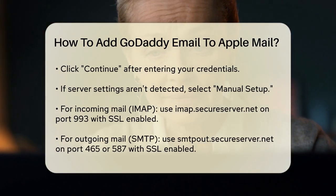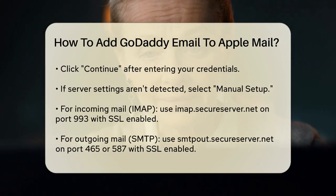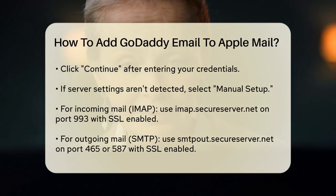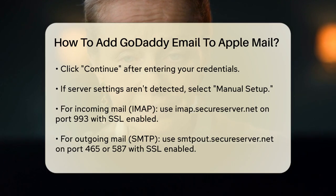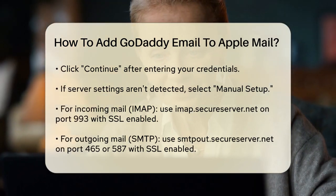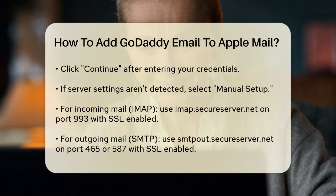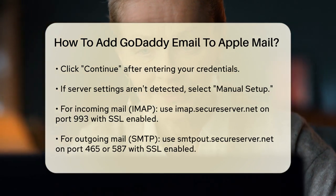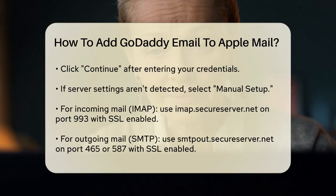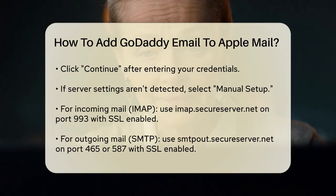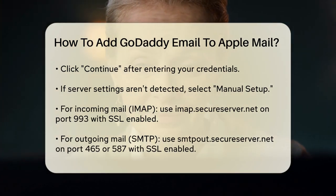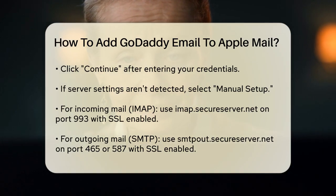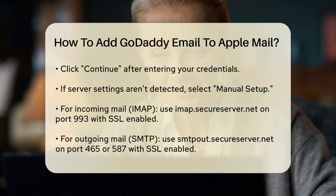The Mail app might not automatically detect the correct server settings for your GoDaddy email. If this happens, you'll need to set it up manually. Select Manual Setup and enter the following server settings. For the incoming mail server (IMAP), use imap.secureserver.net on port 993 with SSL enabled. For the outgoing mail server (SMTP), use smtpout.secureserver.net on port 465 or 587 with SSL enabled.